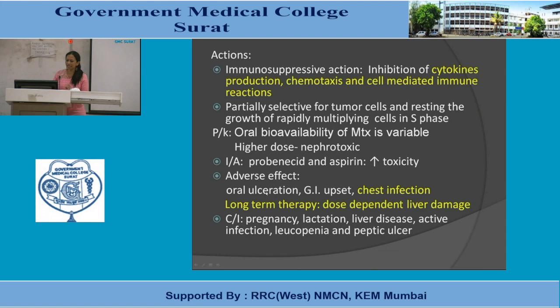Adverse effects of methotrexate include oral ulceration, GI upset, and chest infection. Immunosuppression increases the risk of opportunistic infections. Long-term therapy causes dose-dependent hepatotoxicity, potentially progressing to cirrhosis. Because RA patients use methotrexate long-term (unlike cancer chemotherapy where it is short-term), hepatotoxicity risk is significantly higher.